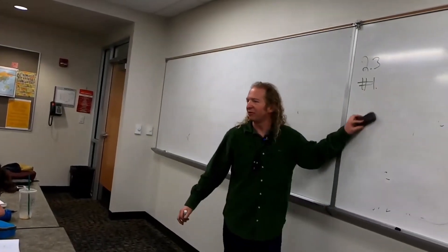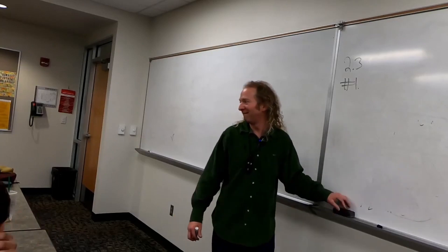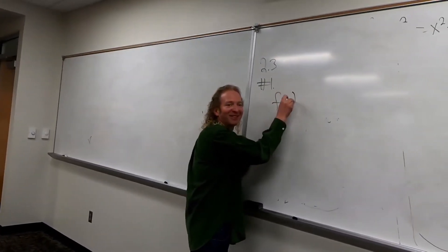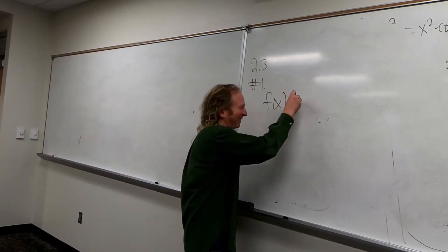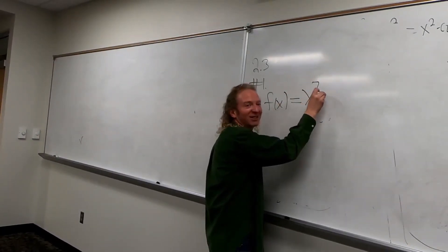So, anyone have 2.3 up? Because I already forgot what it was. You don't have that up, I know you. F of x, thanks Neoma. x to the seventh cosine of x. Cosine of x?